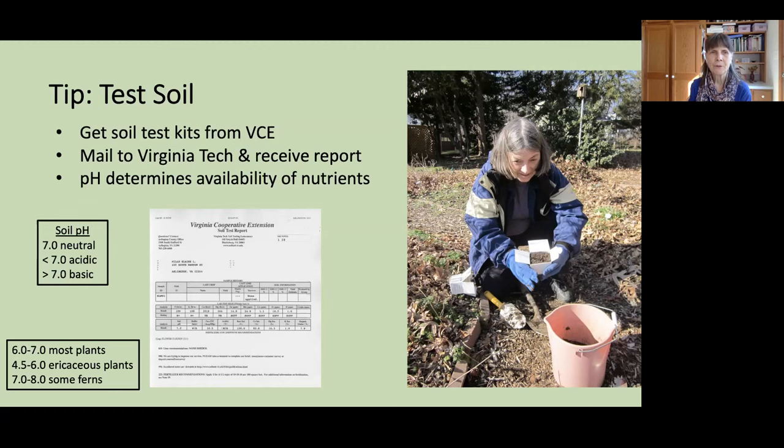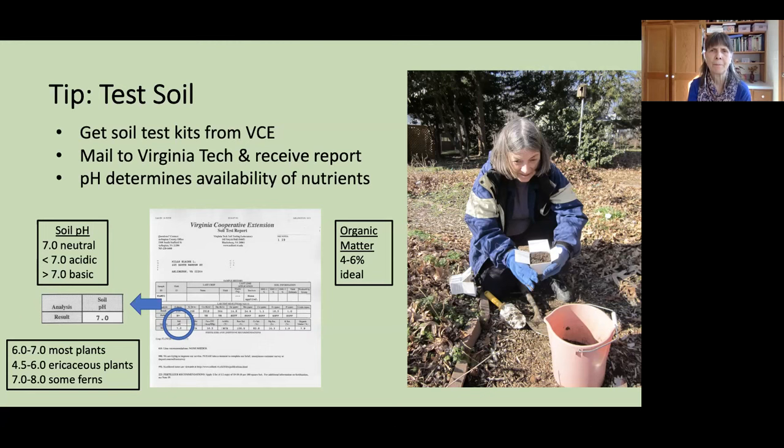My soil test result was 7.0, right in that neutral range. You might also want to test for organic matter — the richness of that matter in your soil. 4 to 6 percent is considered ideal, and I felt I did very well with organic matter at 7.9 percent.